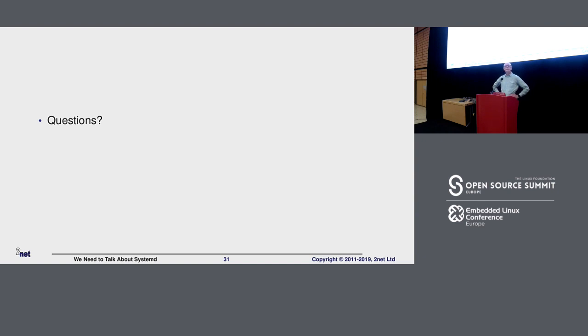We've experienced problems because SystemD was parallelizing too much, especially in combination with the watchdog — our services were already stopped because they weren't responding to the watchdog. Have you experienced something like that? In some cases it's faster to actually not parallelize too much. If SystemD is starting up a million different services, that's going to consume all your CPU resources. So the answer would be to put in the ordering statements — after and before — so that things happen in a more leisurely order.